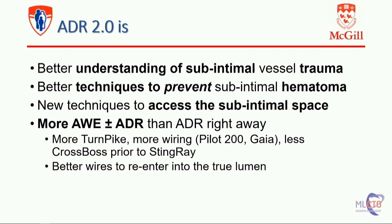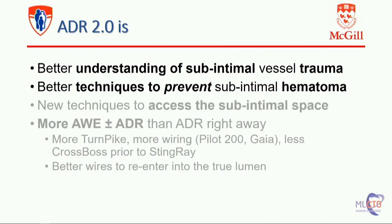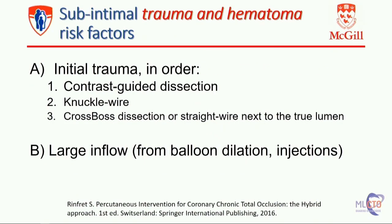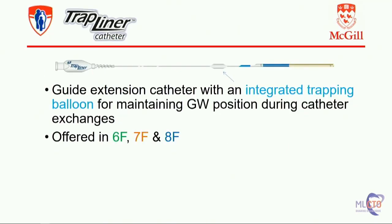The technique has evolved, and there are better wires to re-enter into the true lumen. In terms of trauma you can make to a dissection plane, contrast-guided will be the worst, followed by the knuckle. The least traumatic is a CrossBoss dissection or a straight wire that's next to the true lumen or a re-entry spot. These are likely the least traumatic, and you can take advantage of this.